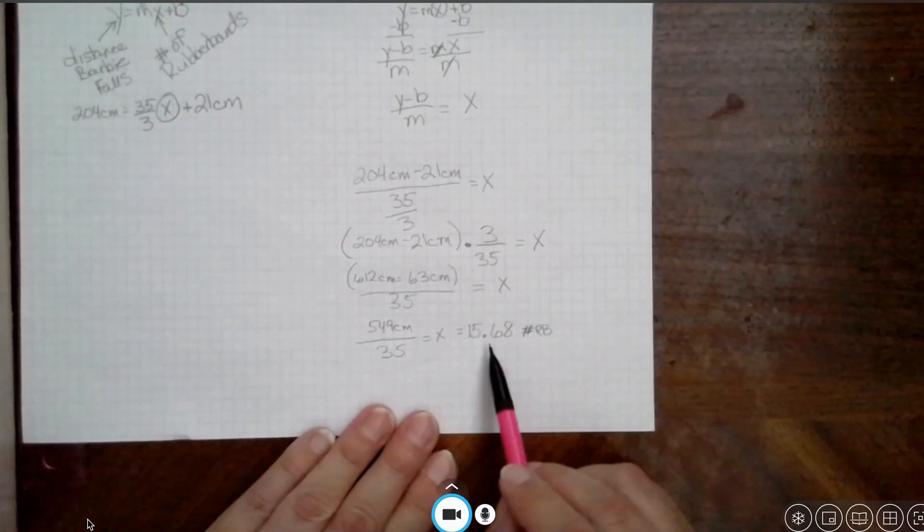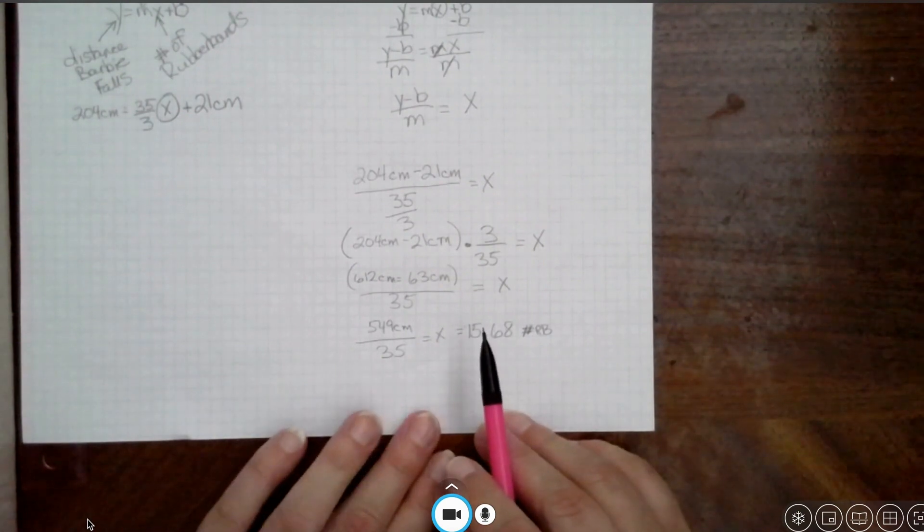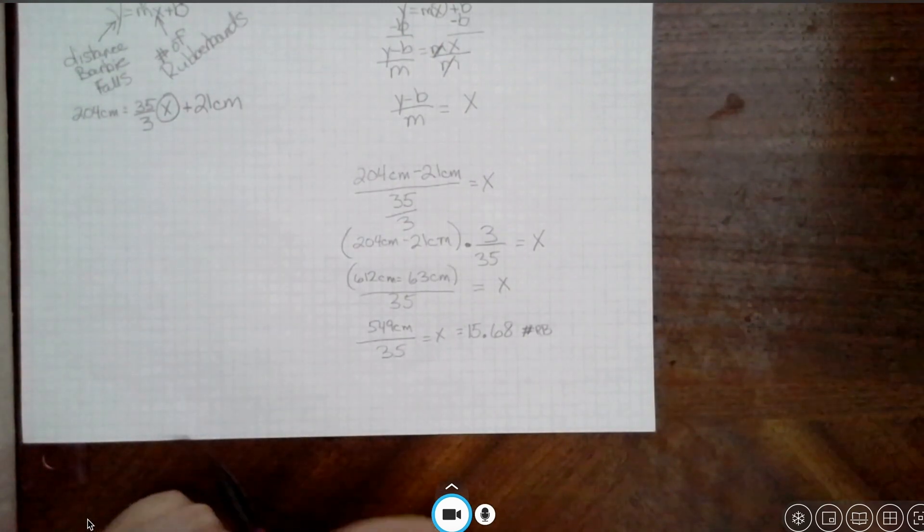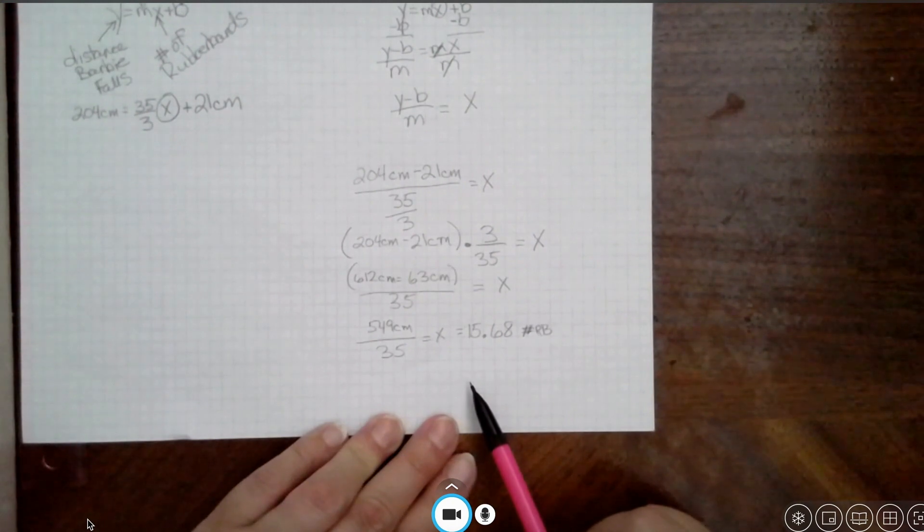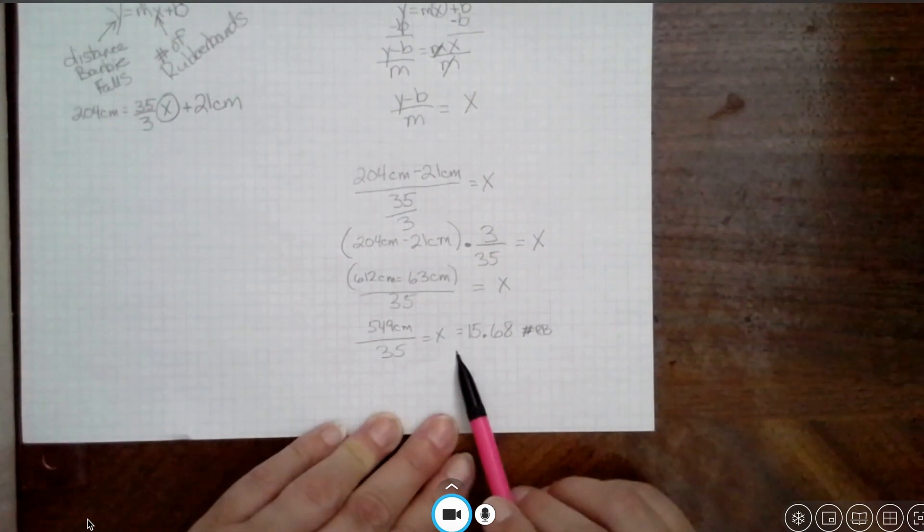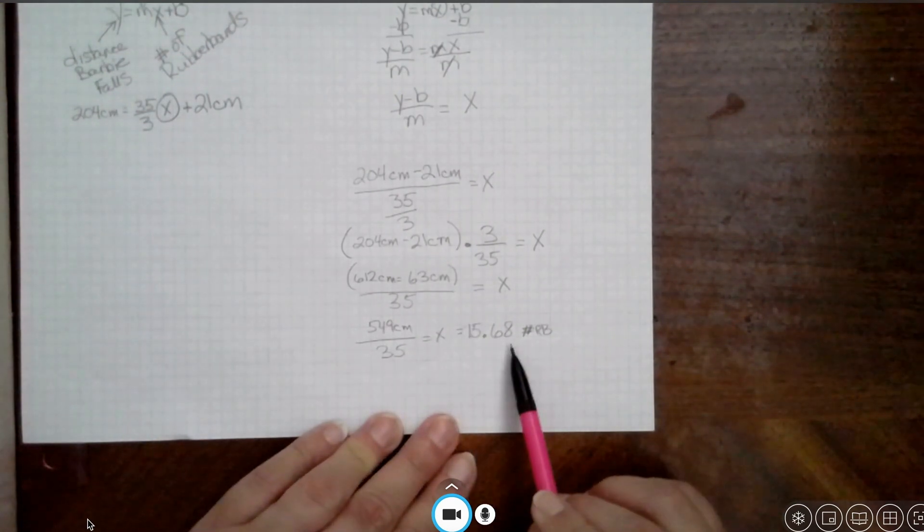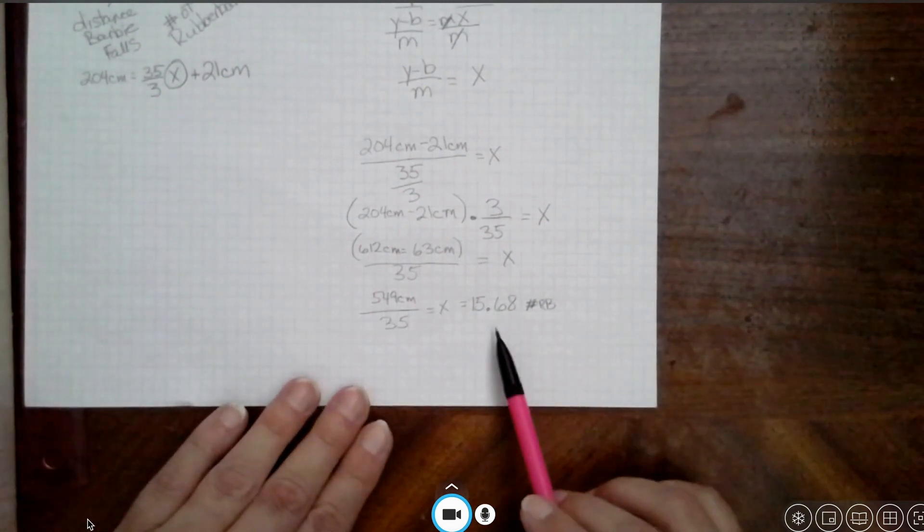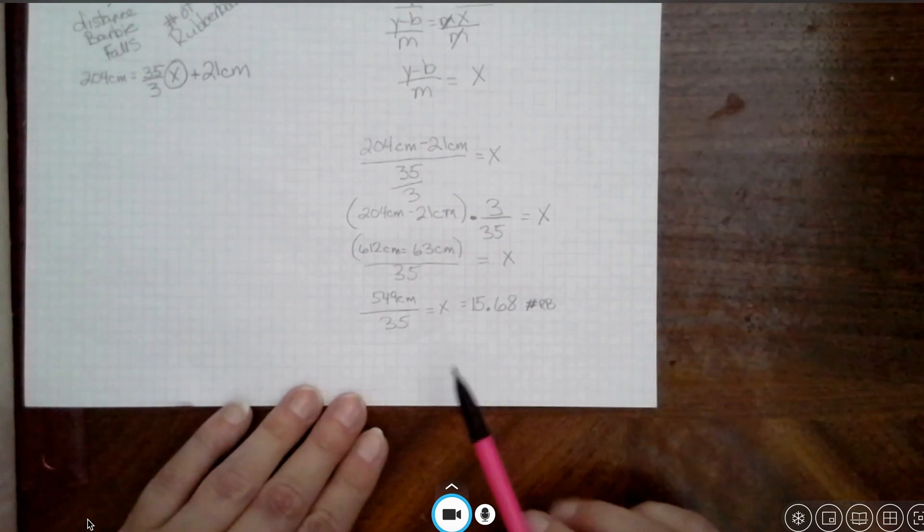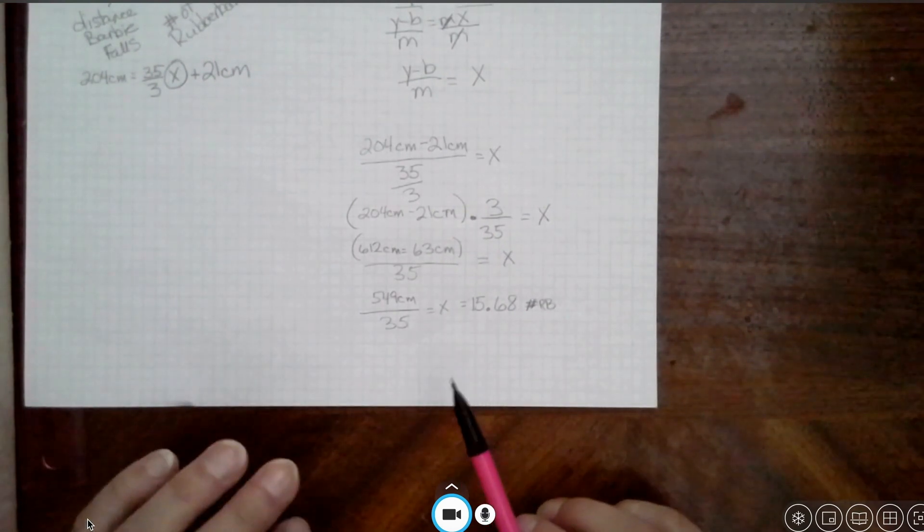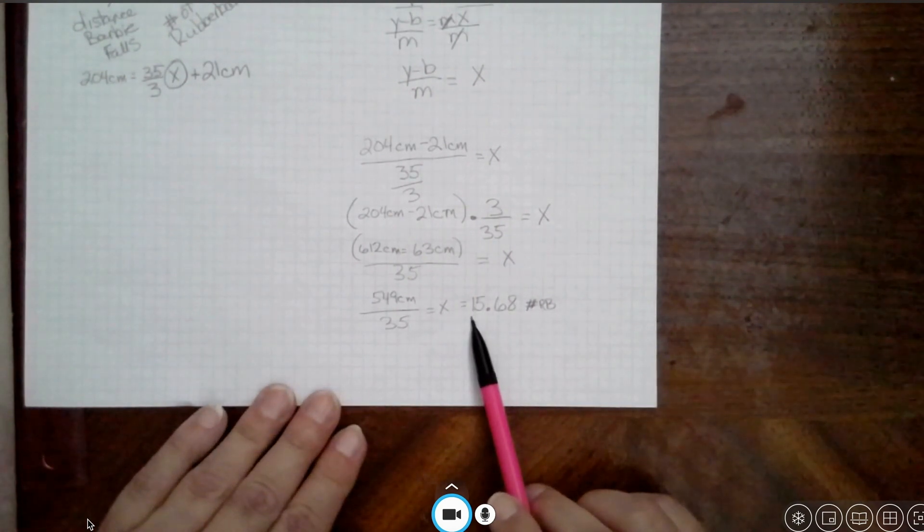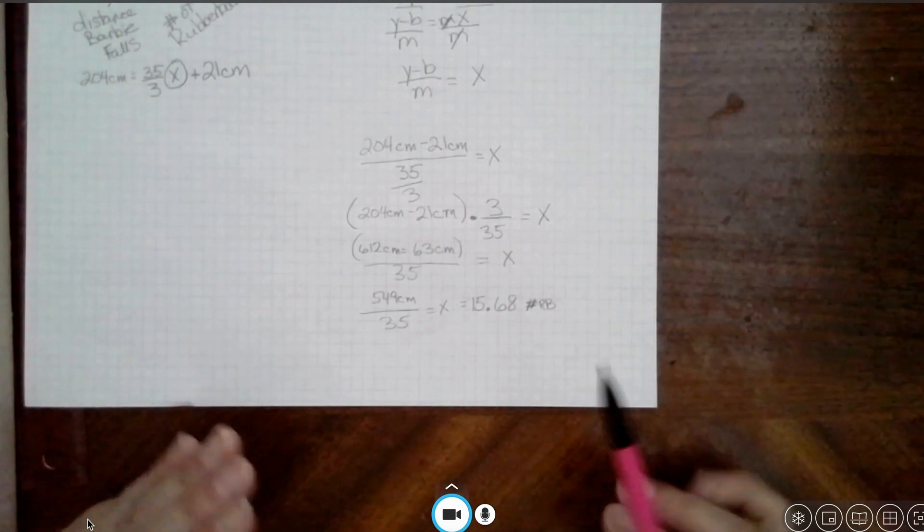This does bring in a problem because you cannot have .68 rubber bands. Some of my students in the past have tried to cut rubber bands. They have tried to tie them off, put extra knots in them to limit their stretchiness to get to that exact point. But, what I tell my students is now as a group you have to make a decision. Do you want to play it safe and go with 14 rubber bands? Do you want to just round down and go with 15 rubber bands or do you want to take a chance and round up to 16 rubber bands? That gives them time to have discussion about these numbers, what they mean, and what are some of the other variables within the rubber bands such as how tightly they tie the knots.